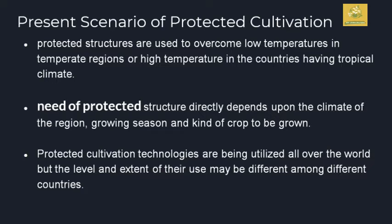Looking at the present scenario of productive cultivation, productive structures are used to overcome low temperature in temperate regions or high temperature in countries having a tropical climate. The need for productive structures directly depends upon the climate of the region, the growing season, and the kinds of crop to be grown in the particular area. Productive cultivation technologies are being adopted all over the world, but the level and extent of usage differs mainly among different countries. In developed countries, productive cultivation usage is said to be high compared to developing and undeveloped countries.